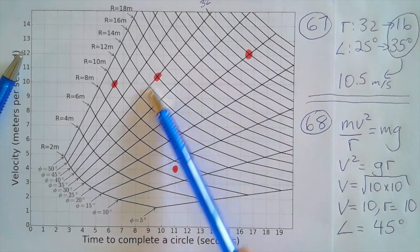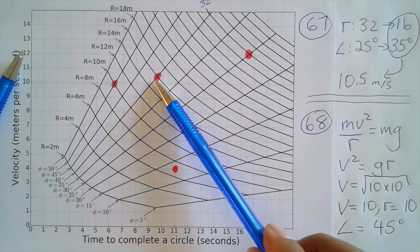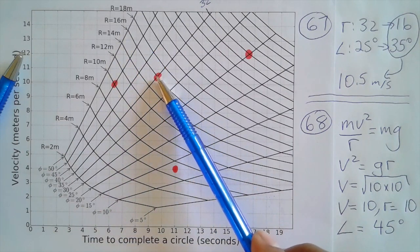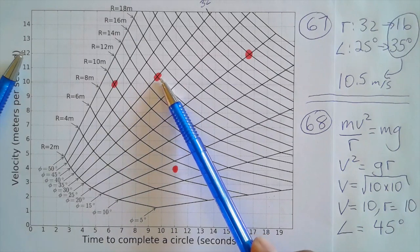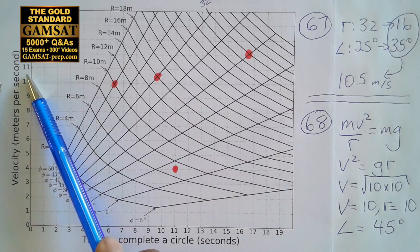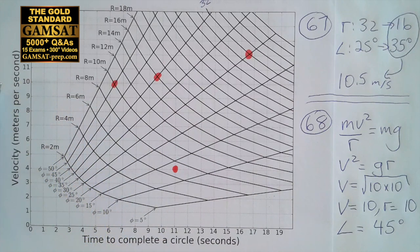The radius of 16 is right here and the angle of 35 is right here. This is 35 degrees and a radius of 16. Now we want to see what velocity that makes, and that brings us right across to 10.5. So 10.5 is going to be the velocity in meters per second, and so that's question 67. The closest number is going to be 10, so that's answer choice D.